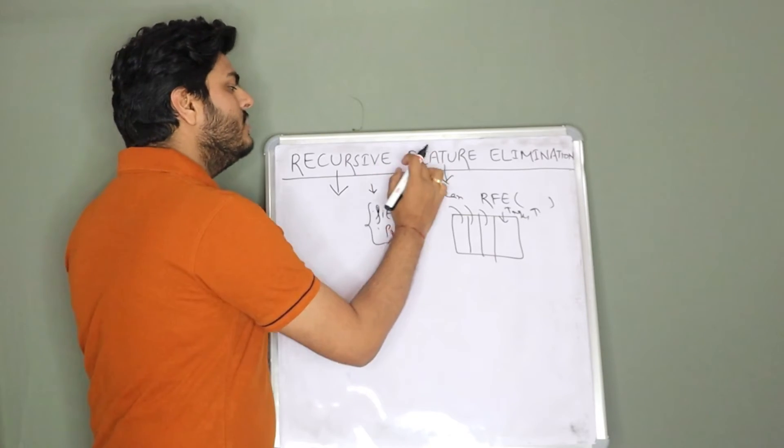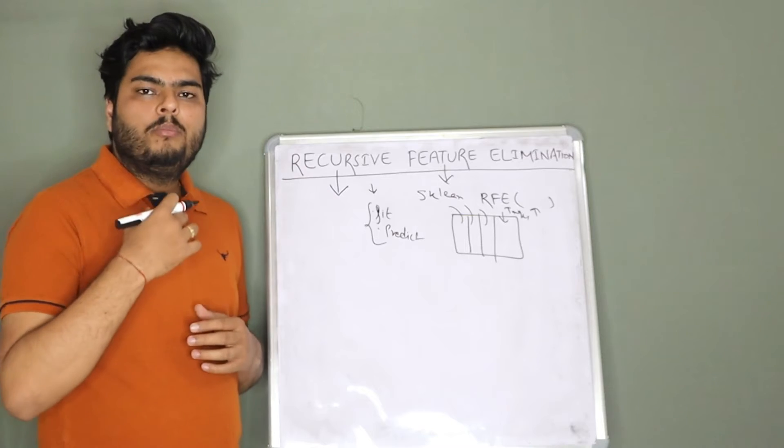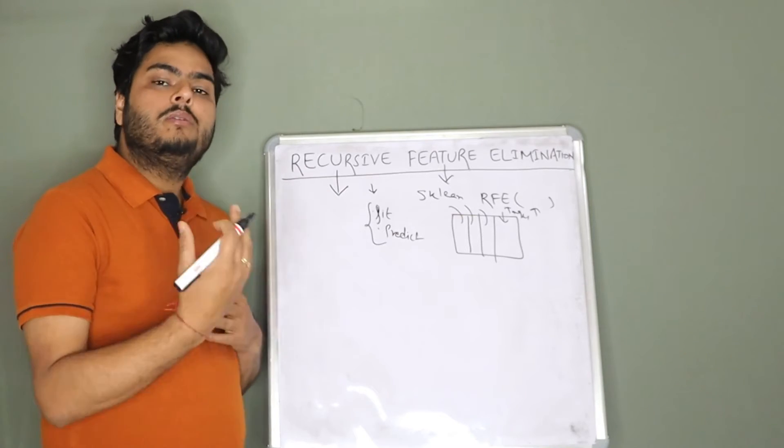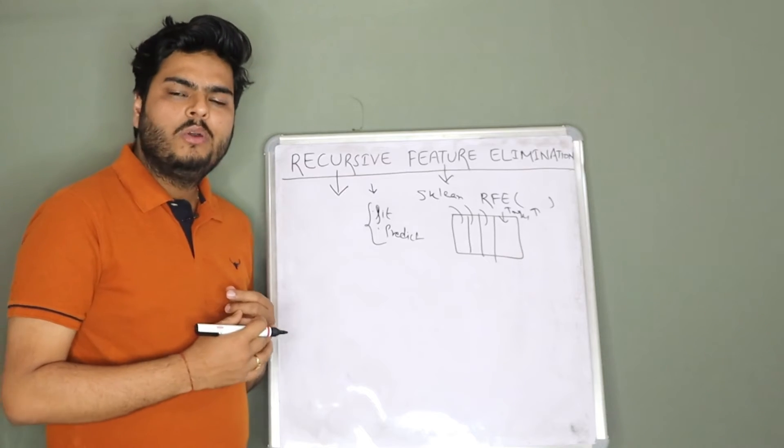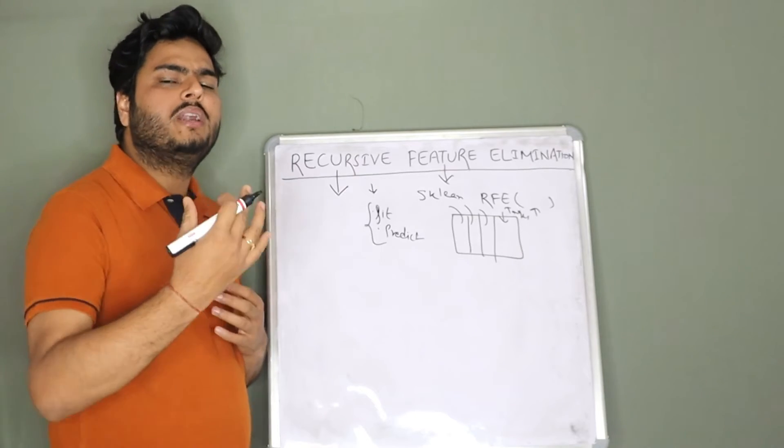What happens if you combine all these three? By doing something repetitively we are eliminating features from the data. Why do we need to do that?